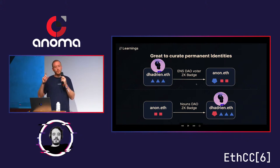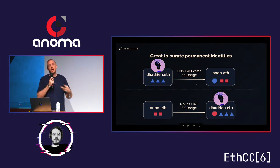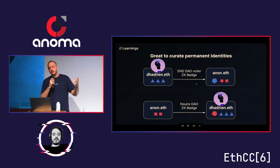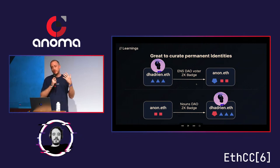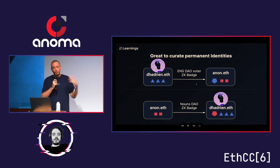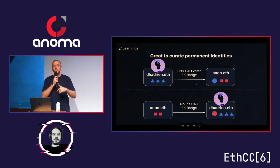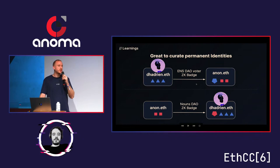We got quite a lot of learnings from ZK badges. It's great to curate your persistent identities — say I have two public identities, one doxxed (adriano.eth) and another unknown Twitter account. I can prove on my unknown.eth that I have reputation from my public profile, and in reverse, bring private data from my unknown.eth — say I'm a big spender — and prove on adriano.eth that I spent more than 10 ETH as gas. That's why ZK badges are great.